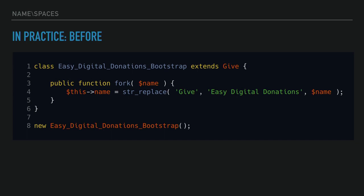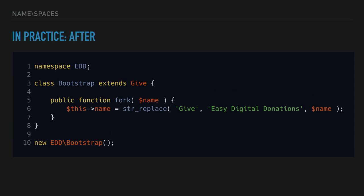This is an in-practice example. We have a class Easy Digital Donations Bootstrap extends Give. There's a fork method that replaces the word Give with Easy Digital Donations — a special joke for EDD fans, since Give forked EDD. But in terms of namespacing, the before is a verbose class name that extends Give, has a method, and runs the bootstrap. This is how we might namespace it: namespace EDD, class Bootstrap, extends Give, same method. When you instantiate, it's just new EDD Bootstrap — a lot more compressed and less verbose.